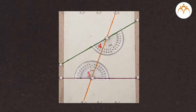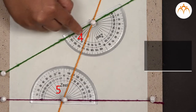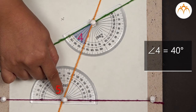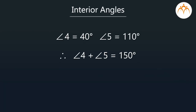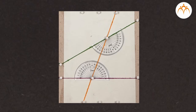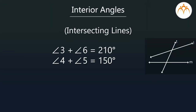Similarly, if we measure the angles in the second pair, angle 4 is 40 degrees and angle 5 is 110 degrees. If we add their measures, we can see that when a transversal cuts two intersecting lines, we get two pairs of interior angles, but the sum of the measures of angles in each pair is not equal to 180 degrees.